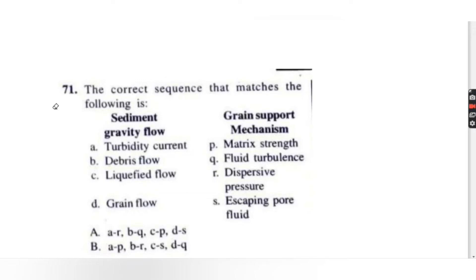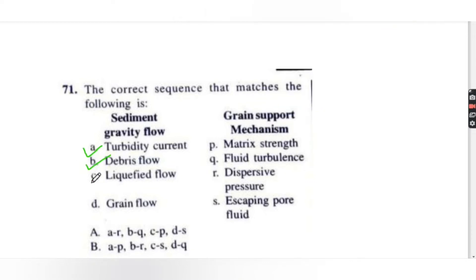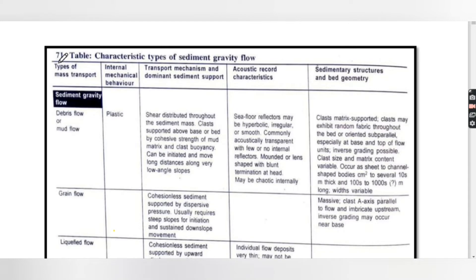Hello friends, welcome to our YouTube channel. Today we are discussing CSIR NET exam questions. The first question: what is the correct sequence that matches sediment gravity flow with its grain support mechanism? The options for sediment gravity flow are turbidity current, debris flow, liquefied flow, and grain flow. The support mechanisms are matrix strength, fluid turbulence, dispersive pressure, and escaping pore fluid.